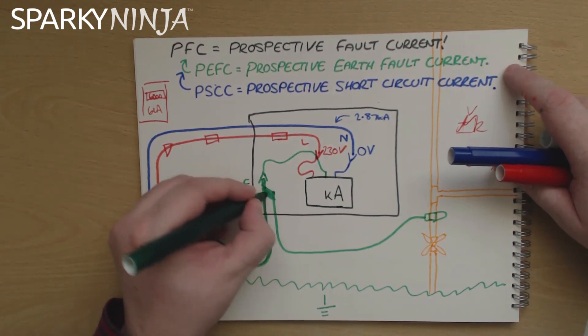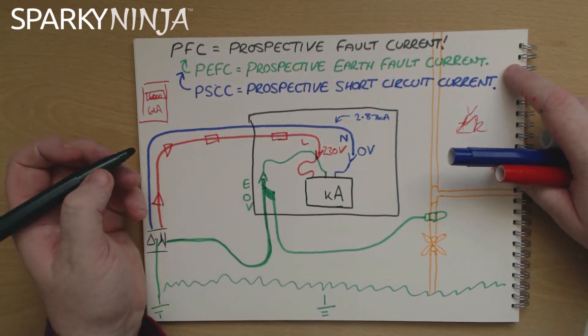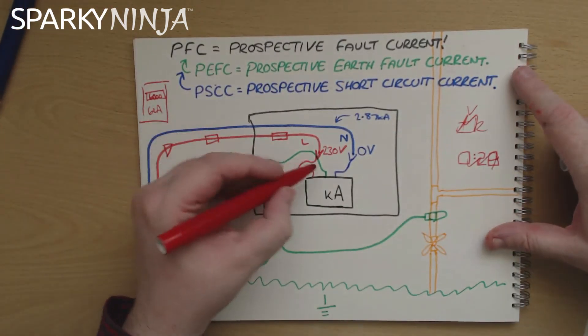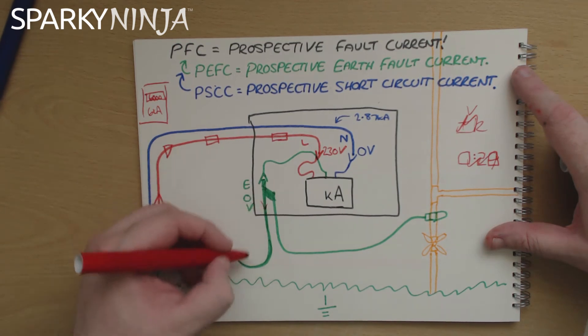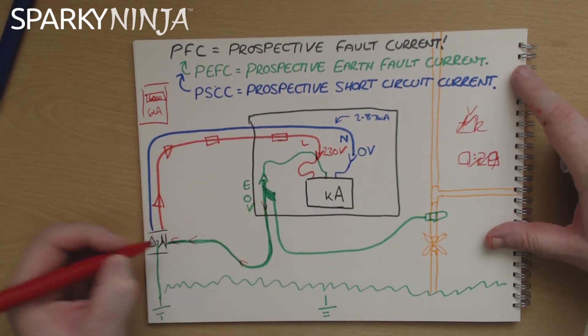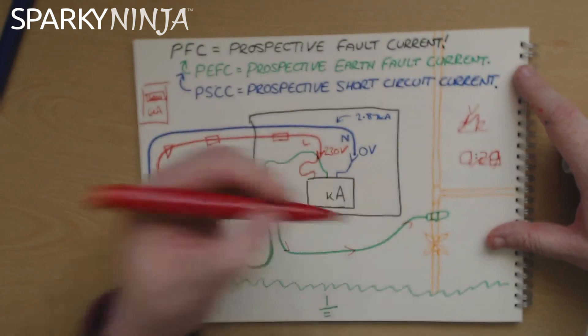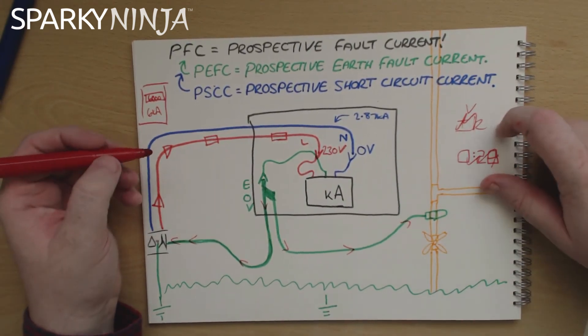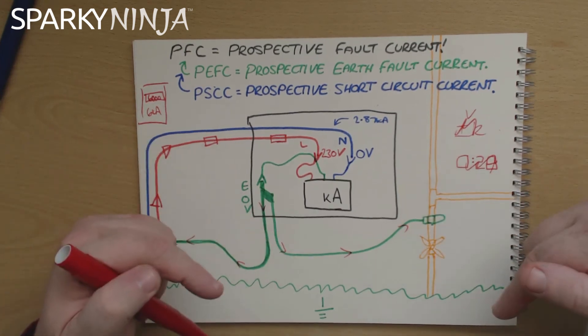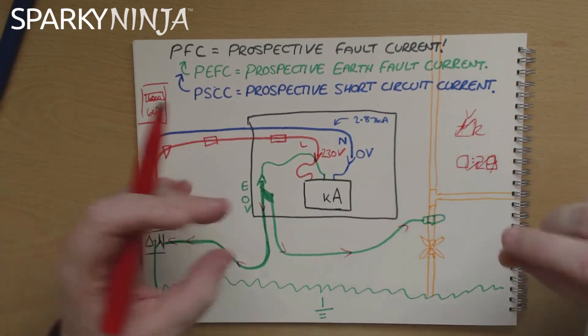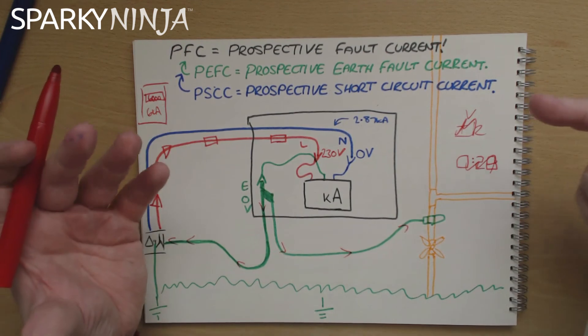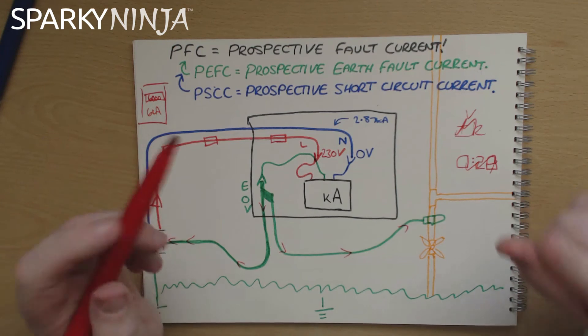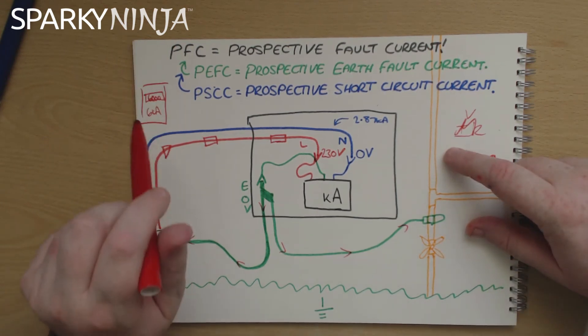But one key thing here if you're at the supply you may have currently your earth disconnected because you may have just done a Zs test you must reconnect that at this stage before you do this test. This test must include all of the parallel paths so when you do a test you have the current flowing down the earth and straying down this parallel.